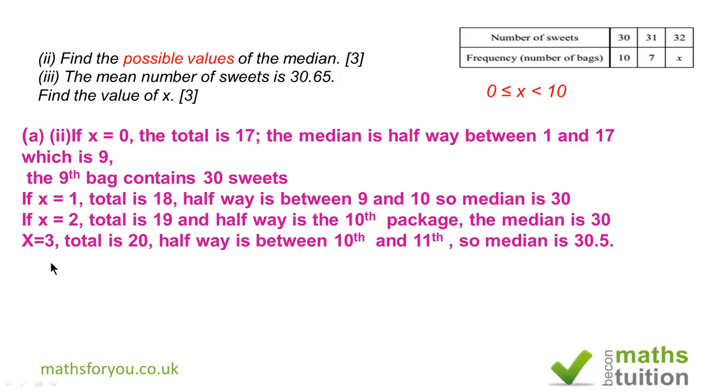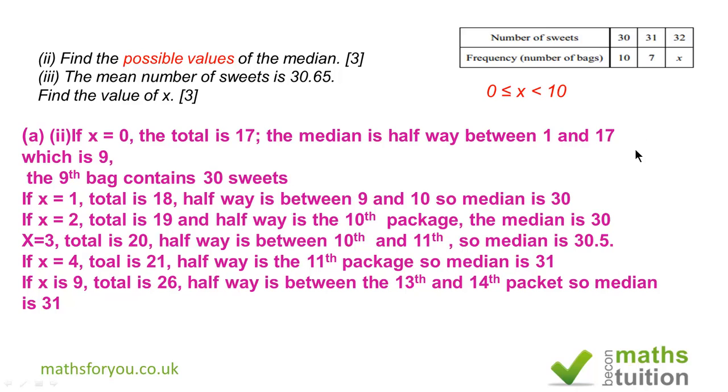If x is 4, the total is 21 and half way is the 11th package, so the median is 31 because the 11th package has got 31 sweets, and so on.